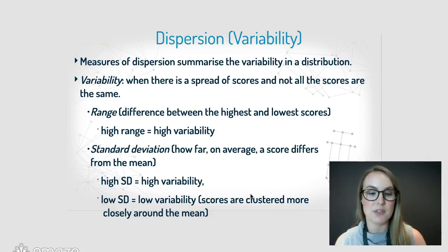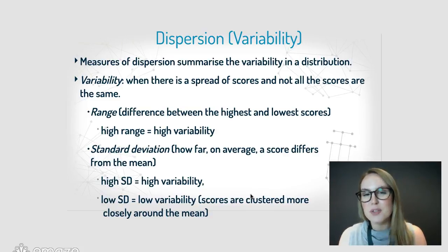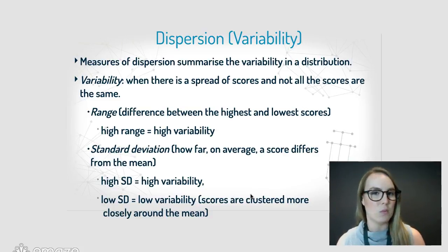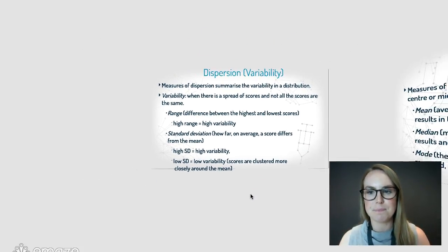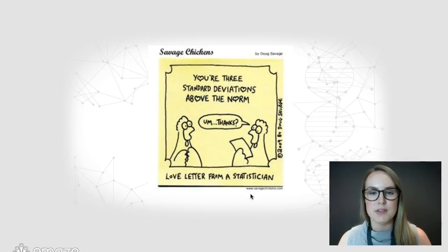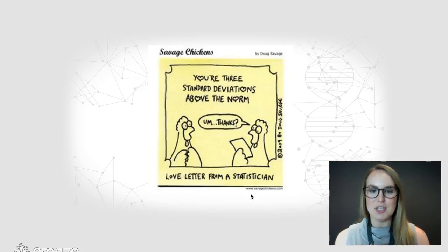On the other hand, a low standard deviation means low variability — scores are clustered more closely around the mean. In that class, perhaps most students got a B, with maybe one A and one C, so there's very little difference between scores. There's even a comic here of a love letter from a statistician saying his girlfriend is three standard deviations above the norm — she's that outlier, while everyone else is clustered together.